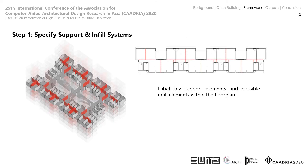Beginning with step one. The support elements shown in grey and black are the supporting structures that will never be replaced throughout the lifetime of the building. The infill elements shown in red are elements that divide adjoining spaces and can be removed to generate larger clusters, and vice versa.